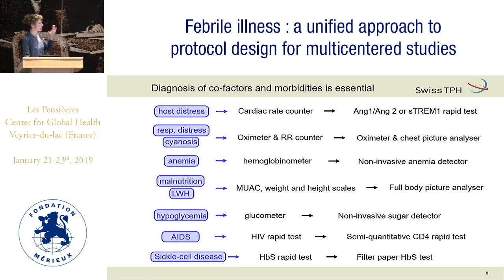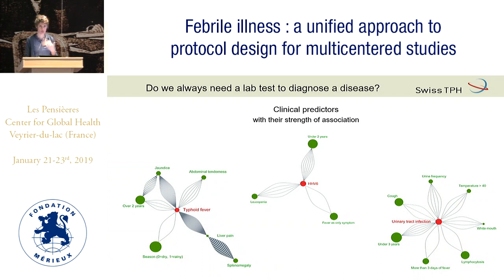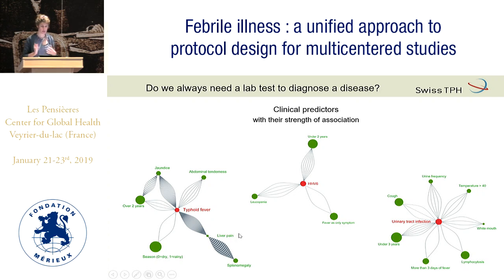Going now to the pathogen — do we always need a lab test for detecting infection? Up to now we have done not too badly using clinical predictors. For typhoid, you can see the strength of association with splenomegaly and liver pain. So you have to cleverly combine these clinical predictors, and maybe they can sometimes do better than an average lab test.